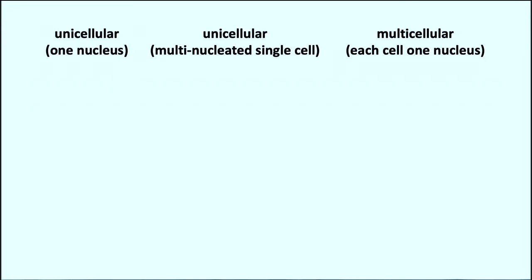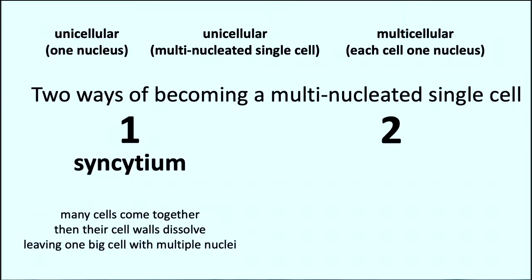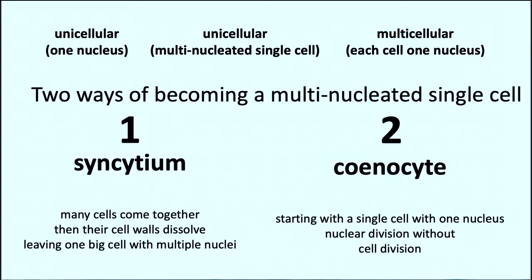We're used to unicellular things with one nucleus, and multicellular things where each cell has a nucleus. But these organisms are unicellular with multiple nuclei. There are two ways this happens: a syncytium, where many cells merge and their cell walls dissolve, leaving one big cell with multiple nuclei; or a coenocyte, where a single cell's nucleus divides repeatedly — two nuclei, then four, and so on — without cell division.